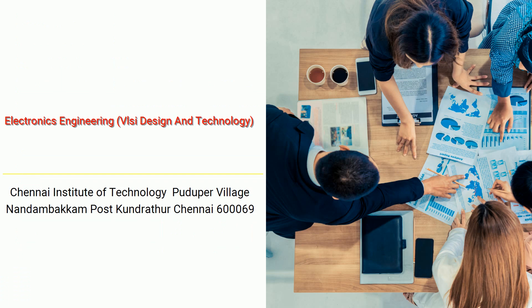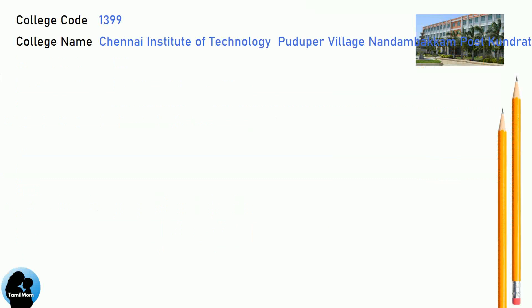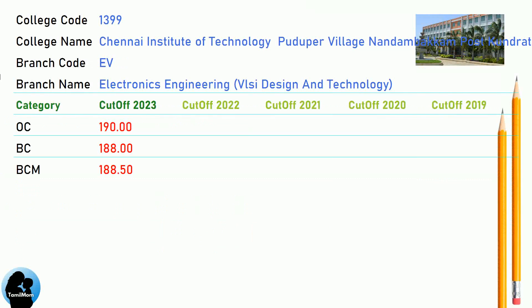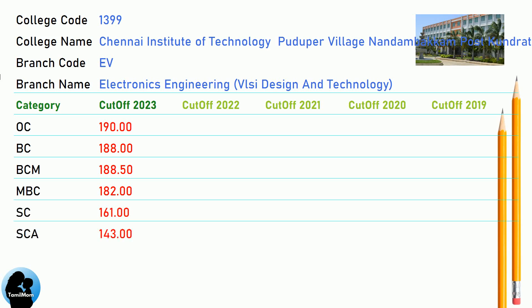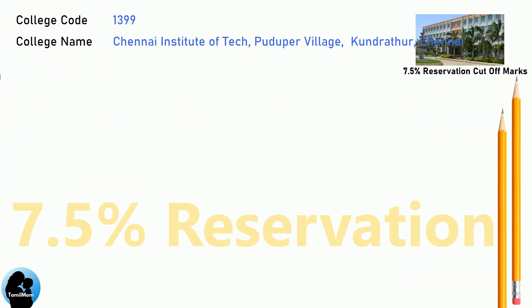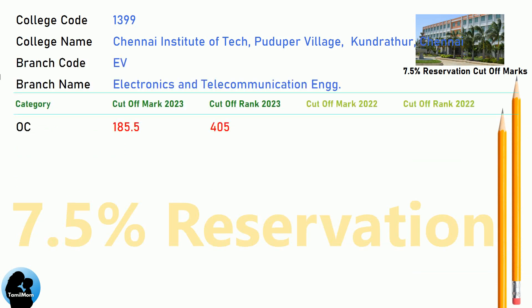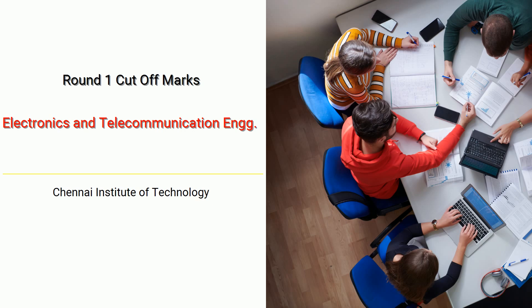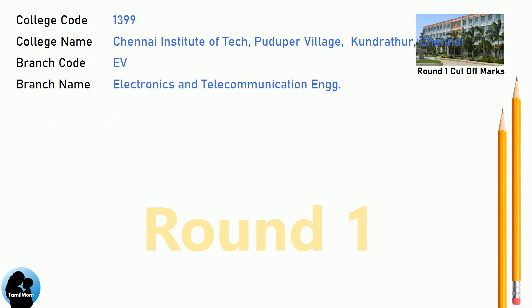DNA Cut-off for Chennai Institute of Technology in Electronics and Telecommunication Engineering. DNA 7.5 Reservation Cut-off for Chennai Institute of Technology in Electronics and Telecommunication Engineering. DNA Round 1 Cut-off for Chennai Institute of Technology in Electronics and Telecommunication Engineering.